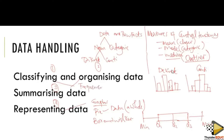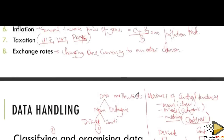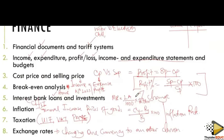The frequency table covers all of data handling. This is what you can expect in Paper 1. As you come, don't forget financial documents and tariff systems, income and expenditure, profit and loss statements. You need to know how to interpret them — in Grade 12 we expect you to interpret rather than draw.